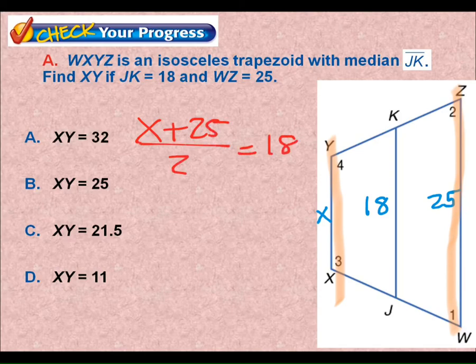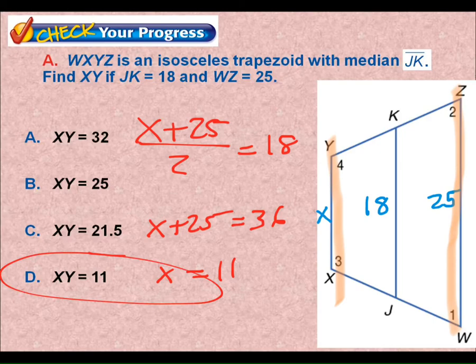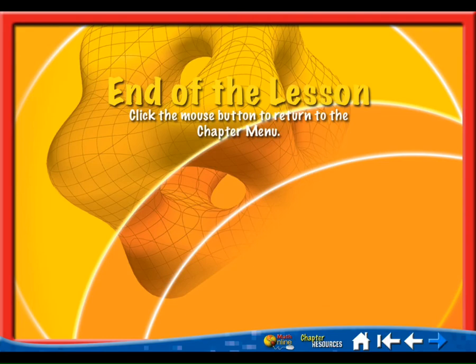And then I would solve that for X, multiplying both sides by 2, subtracting 25 from both sides. So XY would be 11. Because 11 plus 25 is 36, 36 divided by 2 is 18. All you need to know for trapezoids.